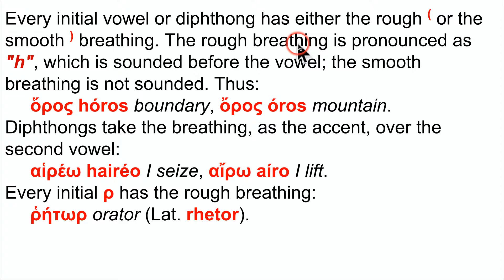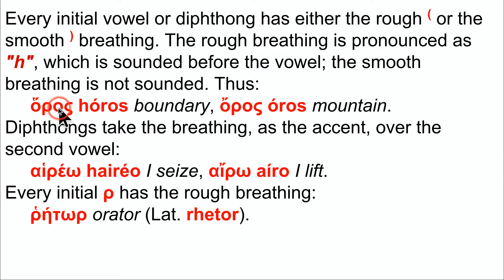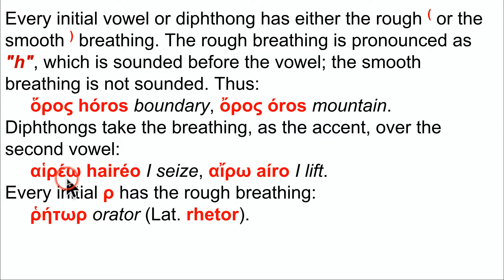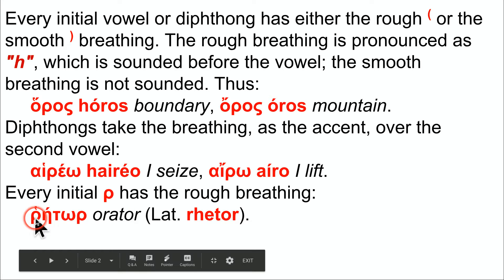Let's talk about breathing. Before every initial vowel, you have either a rough breathing or a smooth breathing, which is basically just the vowel. The rough breathing can occur with the diacritic of the accent mark. So if we have 'horos,' notice the rough breathing goes this way, but if it's a smooth breathing, it goes 'horos.' Diphthongs, which are two vowels working together, take the breathing over the second vowel — 'haireo' versus 'ireo.' And remember, rhos are kind of vowels, so therefore they have a rough breathing over them.